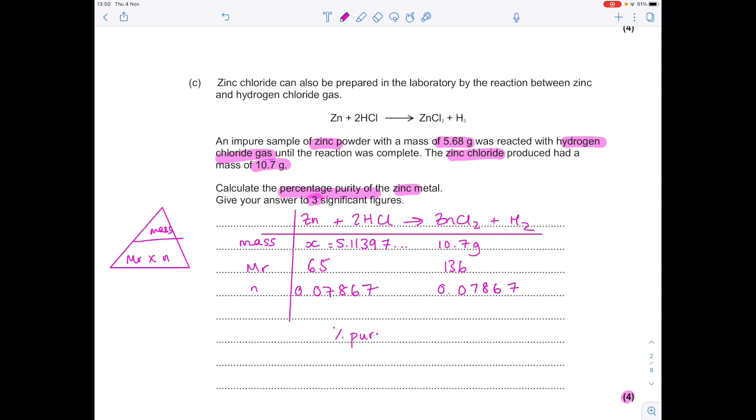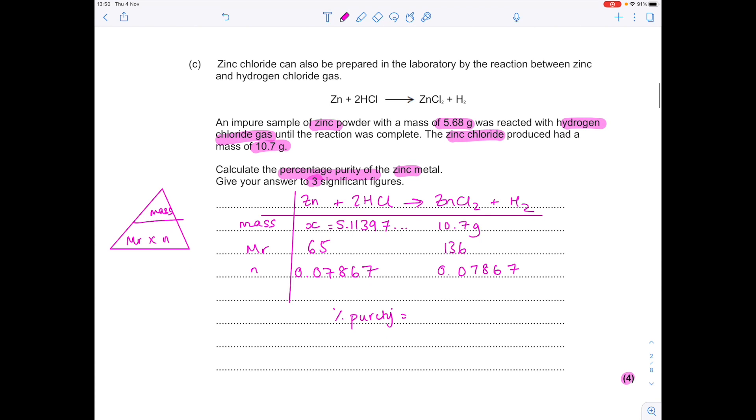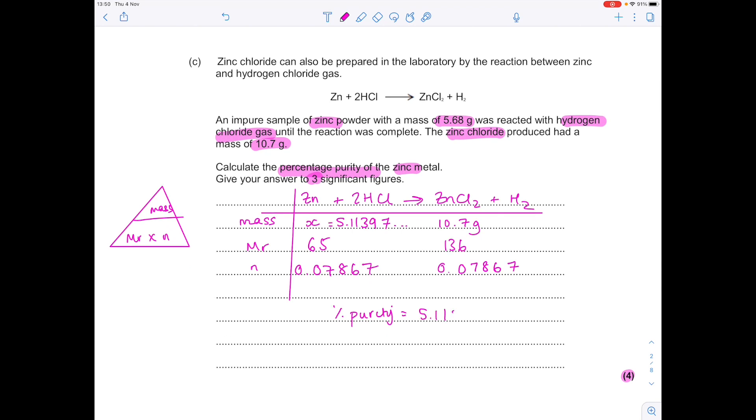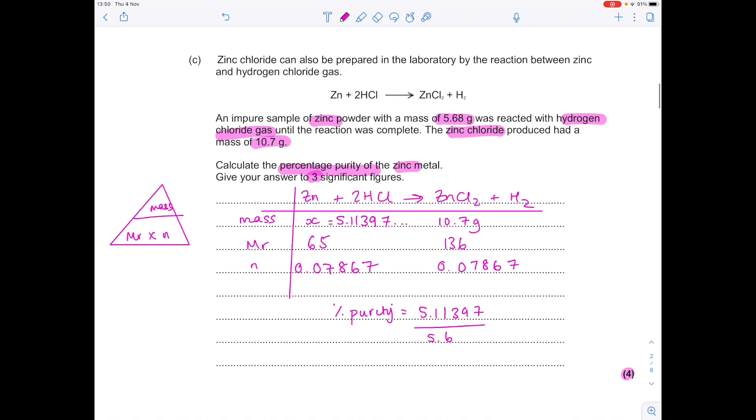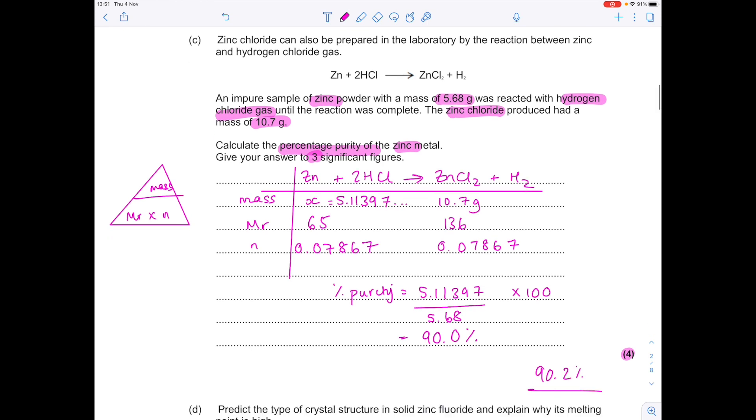So the percentage purity now of zinc. We do our theoretical value here divided by the value given to us in that question. And then it's a percentage. So we need to times by 100. And to three significant figures, that's 90.0%. You'll probably get a value closer to 90.2% if you use the correct numbers from the periodic table for those masses.